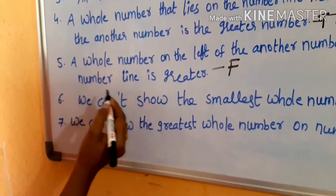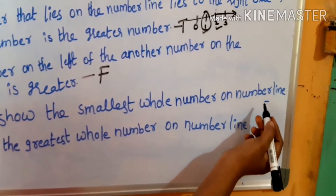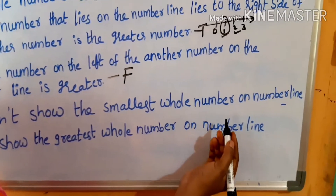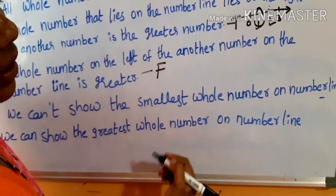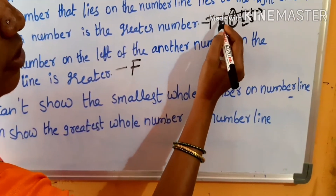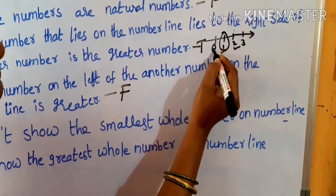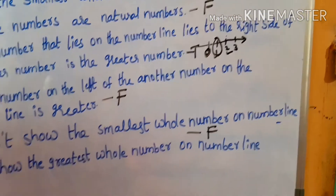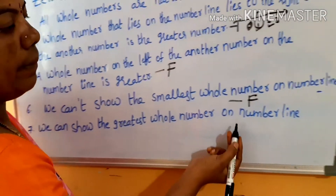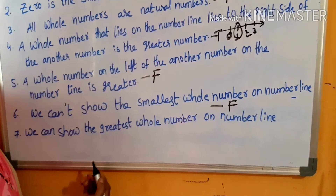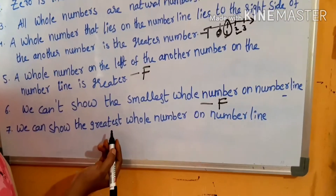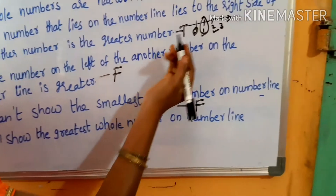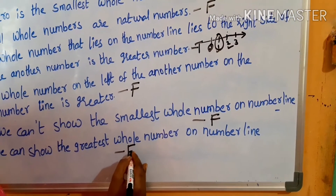We can't show the smallest whole number on number line — is this true? No, we can show the smallest whole number on the number line, so this is false. Next: we can show the greatest whole number on number line — is it possible? We don't know the greatest number, so we cannot show it. This is also false.